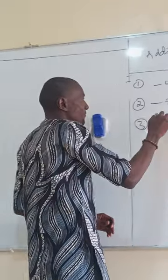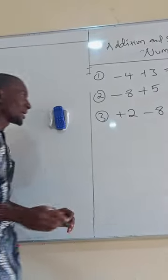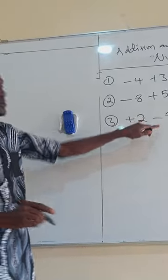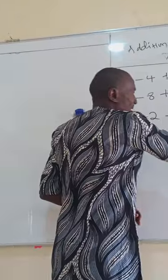Number 3, when you have plus 2 minus 8, you check which of the signs is having the highest number again here. You can see it's minus. You now have 8 minus 2 is what? 6.